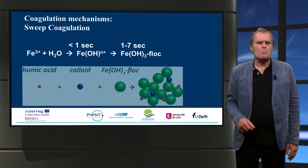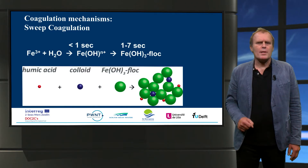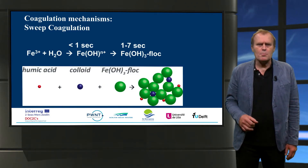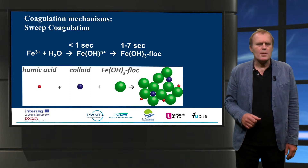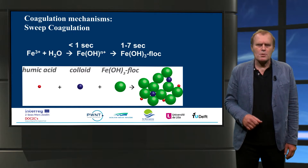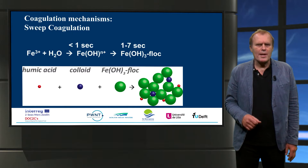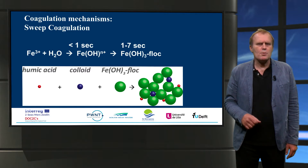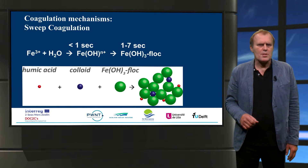The third mechanism is sweep coagulation. The main benefit of this mechanism is that colloids, shown here in blue, are trapped in the larger flocs. At the same time, humic acids are also removed. In most surface water treatment plants, sweep coagulation is used to remove particles and NOM at the same time.